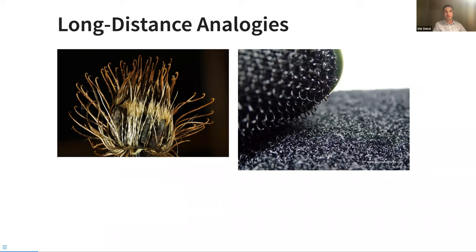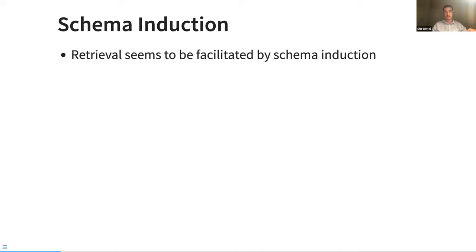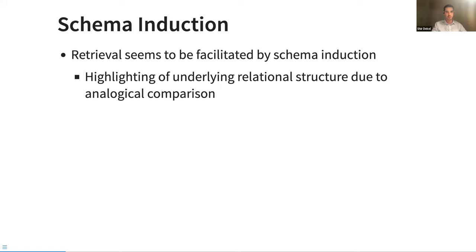Or what Dunbar called long-distance analogies in his taxonomy. So this kind of transfer and retrieval is supposedly, at least to some extent, driven by schema induction, which is the highlighting and extracting of underlying principles and relations, usually due to some kind of analogical comparison. But it's this extracting of underlying relational structures that's the key here that leads to facilitating retrieval and transfer as well.